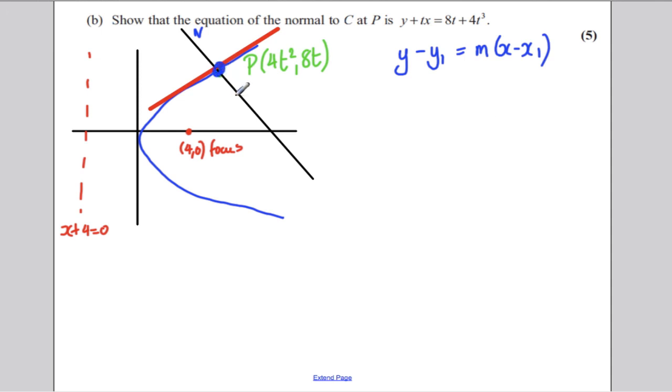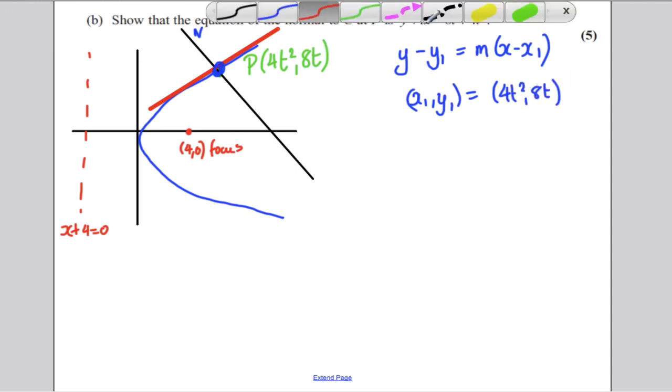Now, do we know a point that lies on this line? Yes, we do. So, our x1, y1, or the only point we know that lies on the normal line, is this point P. So, that's going to be 4t squared, 8t. So, we have ourselves this and this. The only thing we need left is the m. Right? So, we need to work out the gradient of that normal. So, to do that, we're going to work out the gradient of the tangent.